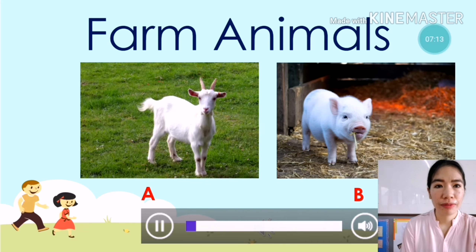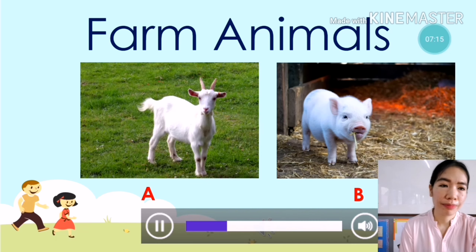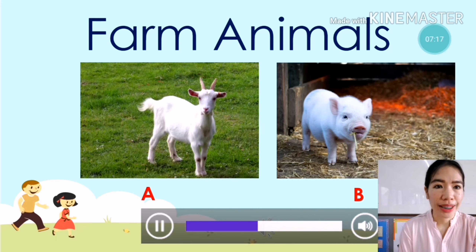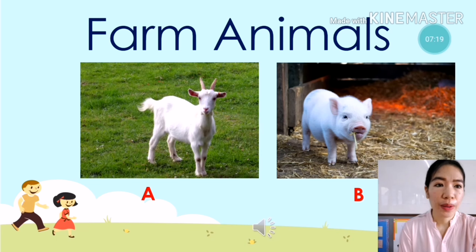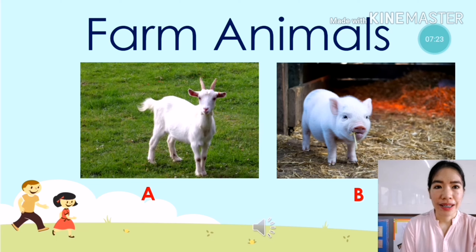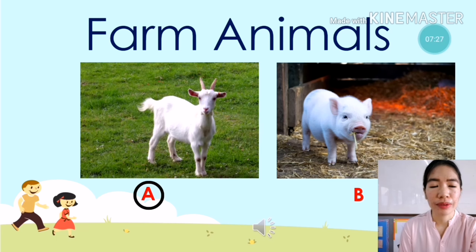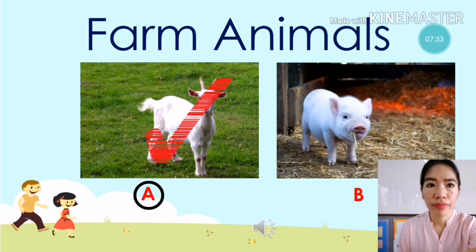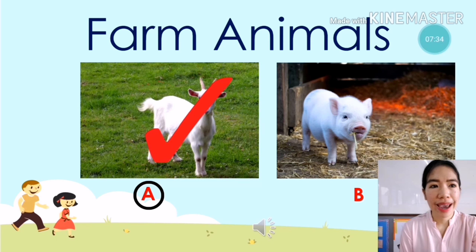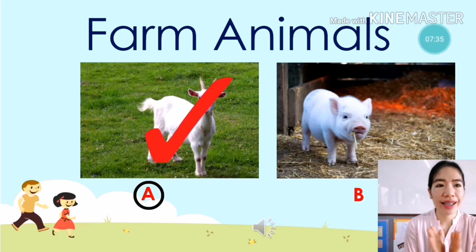Next — what animal is it? My answer is A, goat. Is it correct? Yes, it's correct again! Bravo.